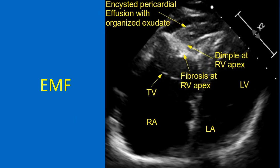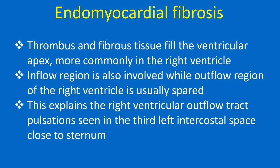Echocardiogram from a modified apical four-chamber view shows the characteristic dimple at the right ventricular apex due to the fibrotic process, along with a small pericardial effusion nearby. The long-standing exudate in the pericardial space has been organized into a clot-like structure. The dilated right atrium and fibrosis at the RV apex are visible. Thrombus and fibrous tissue fill the ventricular apex, more commonly in the right ventricle. The inflow region is also involved while the outflow region of the right ventricle is usually spared, explaining the RV outflow tract pulsations seen in the third left intercostal space close to the sternum.